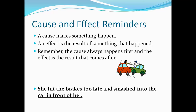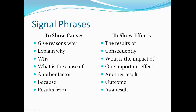Now let's take a look at phrases that signify whether a paragraph is talking about a cause or an effect. In topic prompts or paragraphs in the body of an essay, these phrases serve as clues in determining if the focus is on causes or effects. For example, to show causes, you might see these words: give reasons why, explain why, why, what is the cause of, another factor, because, results from. To show effects, these phrases are some you might see: the results of, consequently, what is the impact of, one important effect, another result, outcome, or as a result.